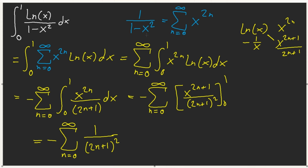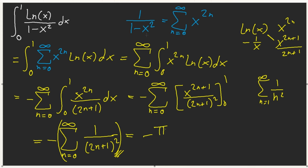So we only have the sum from n equals 0, integrated from 0 to 1 of x to the power of 2n over 2n plus 1. Integrate again, and we're left with 1 over 2n plus 1 squared from 0 to 1. Plugging in 1, we get negative of the sum from n equals 0 of 1 over 2n plus 1 squared. This is equal to pi squared over 8 — it's related to the Gauss sum but for odd numbers. So the answer is negative pi squared over 8.